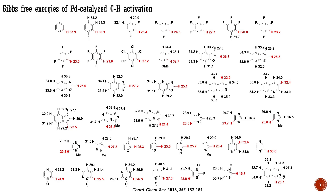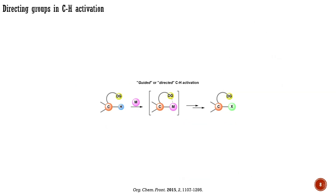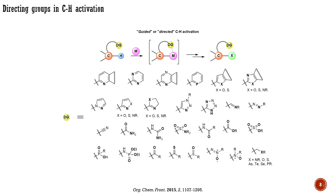The first transition metal-catalyzed CH transformations were developed in the 1960s. However, until the 21st century, this field of research was not really popular. The main reasons were poor reactivity of CH bonds, limited scope, and a lack of selectivity. A real breakthrough in this field was the introduction of so-called directing groups. Directing groups are functional groups possessing a heteroatom with lone pairs of electrons that can coordinate to the catalyst. Acting as ligands, directing groups guide the catalyst to the position that needs to be functionalized, addressing the issues of selectivity and reactivity. The most popular directing groups are those based on pyridines, amides, and Schiff bases.